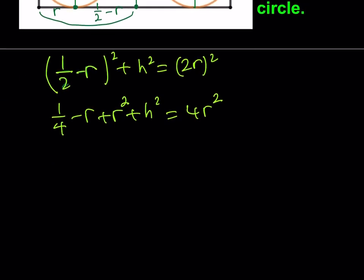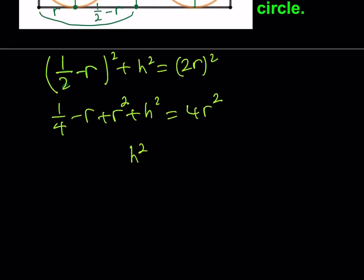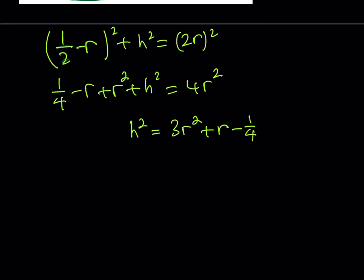Let's go ahead and expand this. One fourth minus R plus R squared plus H squared is equal to 4R squared. So, from here, we can get an expression for H squared. If we subtract everything on the left-hand side besides H squared from 4R squared. So, let's see. 4R squared minus R squared is going to be 3R squared. Negative R plus R. And then, I'm going to subtract one fourth.